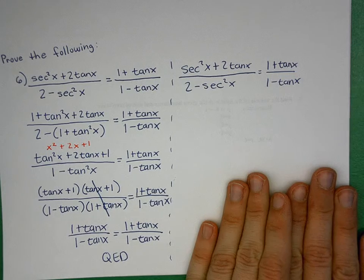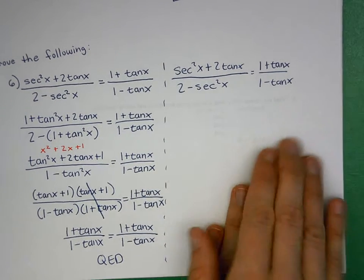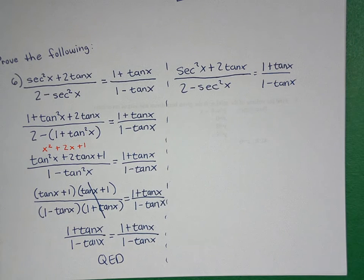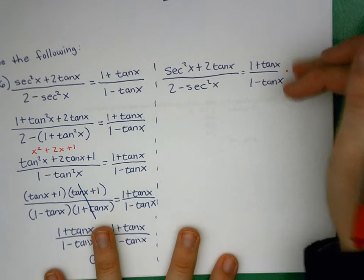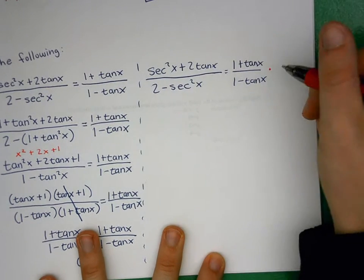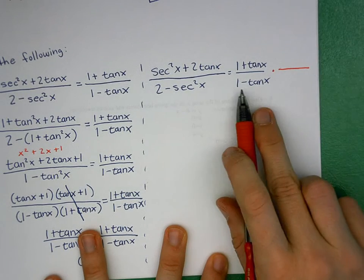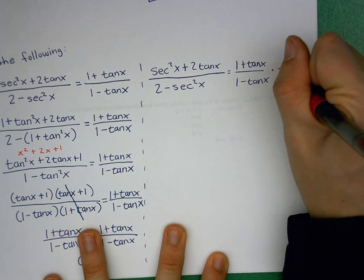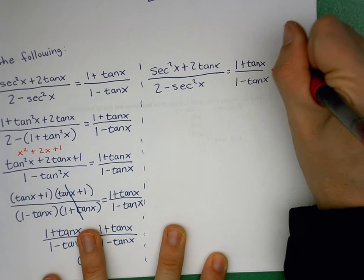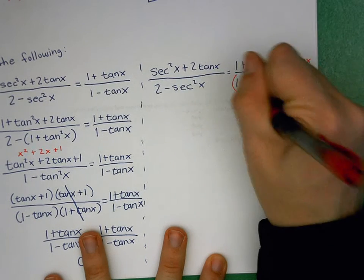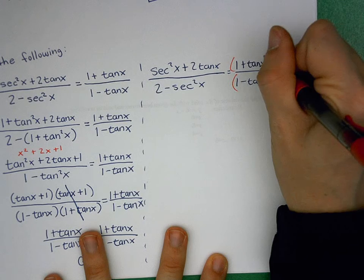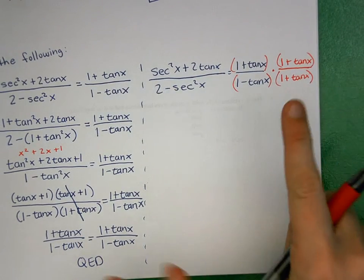For those who worked the right-hand side: most people multiplied by the conjugate of the denominator. So if the denominator is (1 - tan x), multiply by (1 + tan x)/(1 + tan x). A common mistake here: both the numerator (1 + tan x)(1 + tan x) and denominator (1 - tan x)(1 + tan x) require FOILing — you can't just multiply the first and last terms separately.